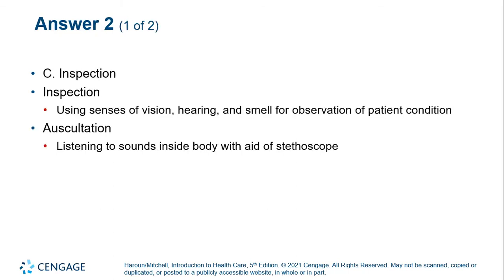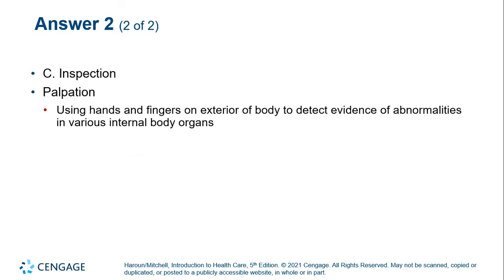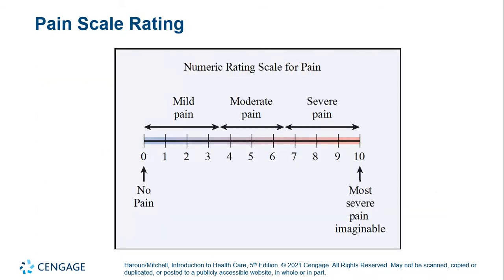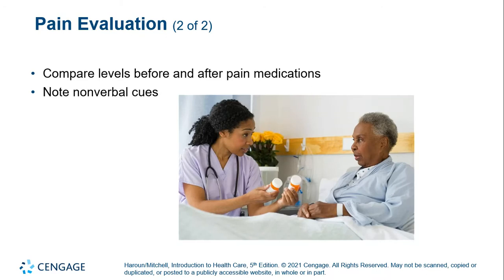Auscultation is using your stethoscope to listen, and palpation is using hands and fingers on the body to detect abnormalities. Part of gathering information has to do with a pain evaluation. We often use the 0 to 10 pain rating scale. If 10 is the most severe pain imaginable and 0 is no pain, how would you rate your pain? We may also note nonverbal cues, which tell us a lot — we learn that in communication.